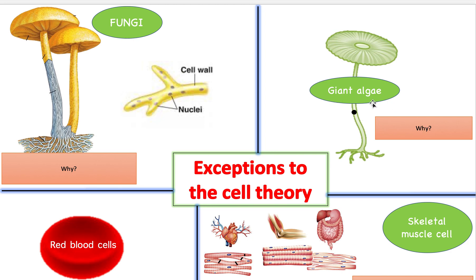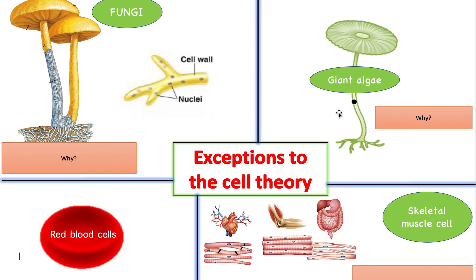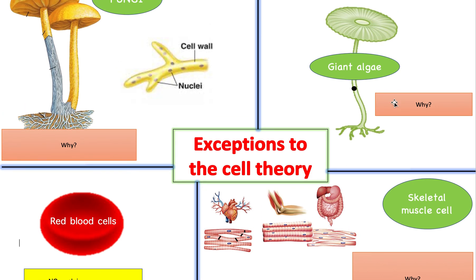The next exception is giant algae. It does have a nucleus — you can see this black dot here — so why is it an exception? Giant algae is an exception because it is giant, hence its name. A normal cell is about 10 micrometers — really, really tiny. This cell is 10 centimeters. It's humongous, clearly visible to the naked eye. So the reason it's an exception is its very large size, not its shape — all cells have different shapes.